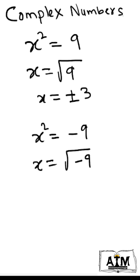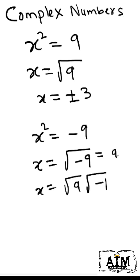To find the square root of negative numbers, we require complex numbers. Here, x can be written as the square root of 9 multiplied by the square root of minus 1, because minus 9 can be written as 9 times minus 1. Since root(a) times root(b) equals root(a·b), we can split the expression.